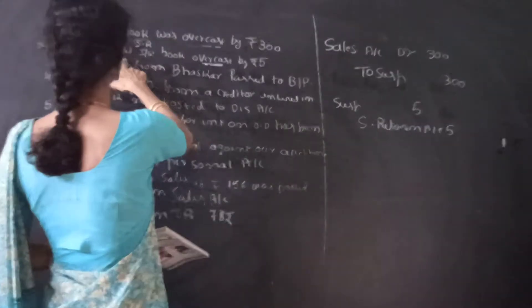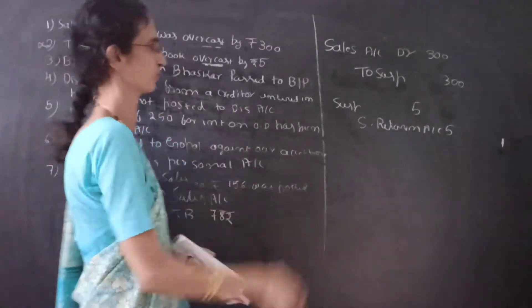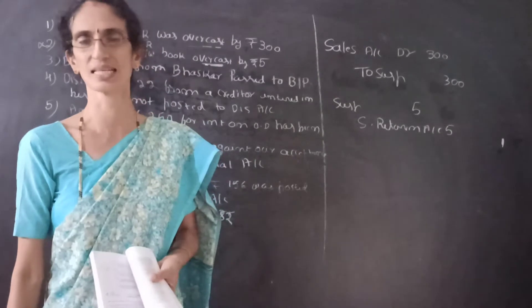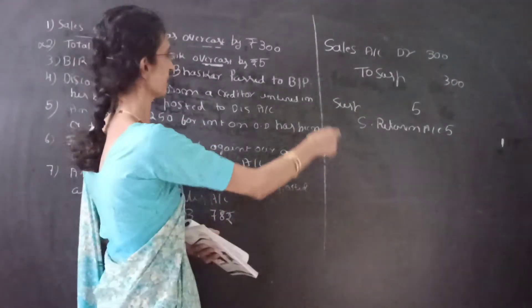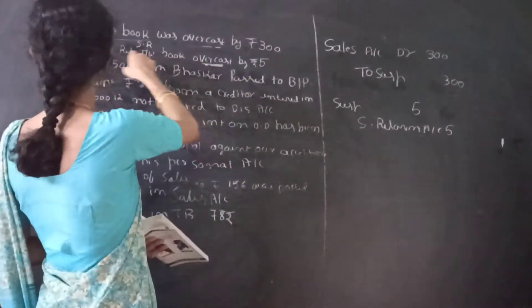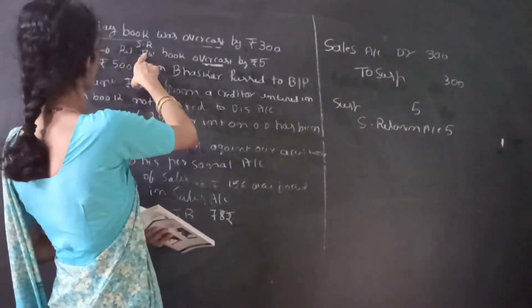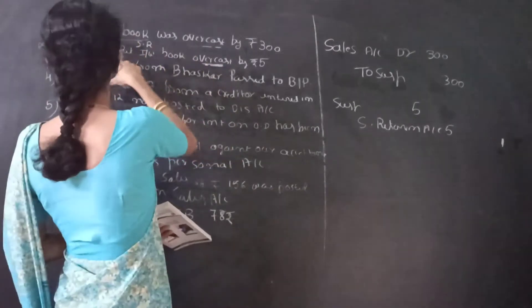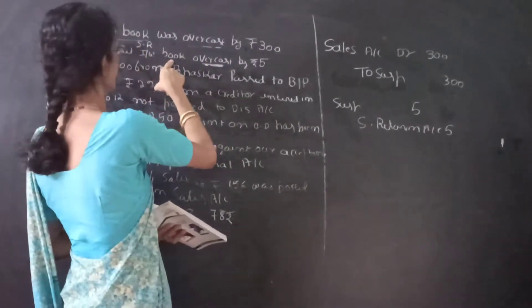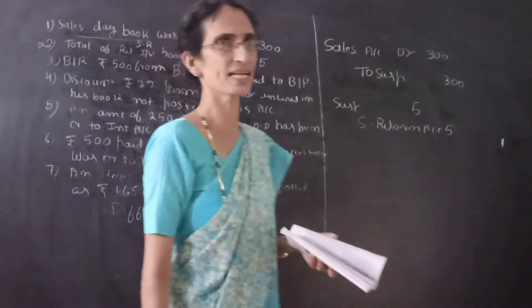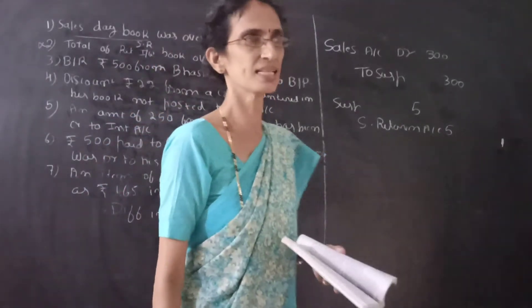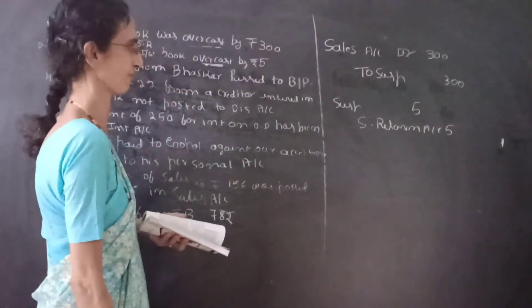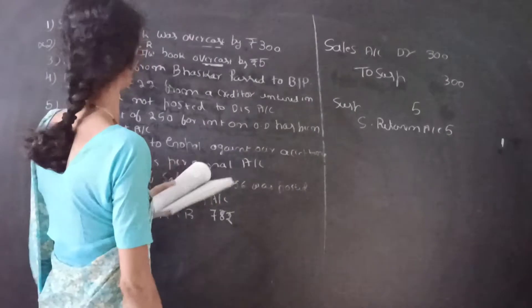You can also write 'Return Inward Account' instead of 'Sales Returns Account' — return inward is nothing but sales returns. The narration is: Being the total of return inward book overcast, rectified.